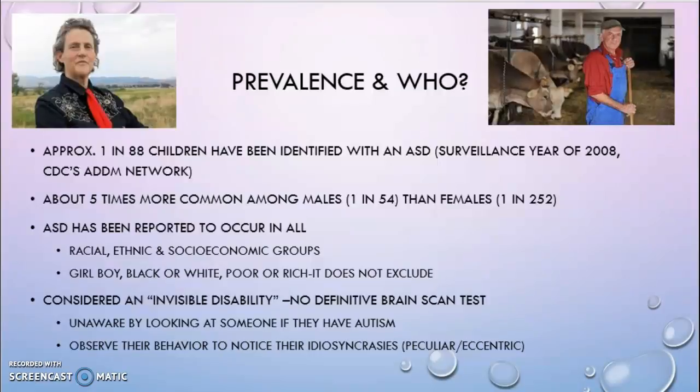Who can have autism? Autism spectrum disorder has been reported to occur in all types of people — all different types of race, all ethnicities, and all socioeconomic groups. So it does not discriminate against girls or boys, black or white, poor or rich, and it does not exclude anyone.